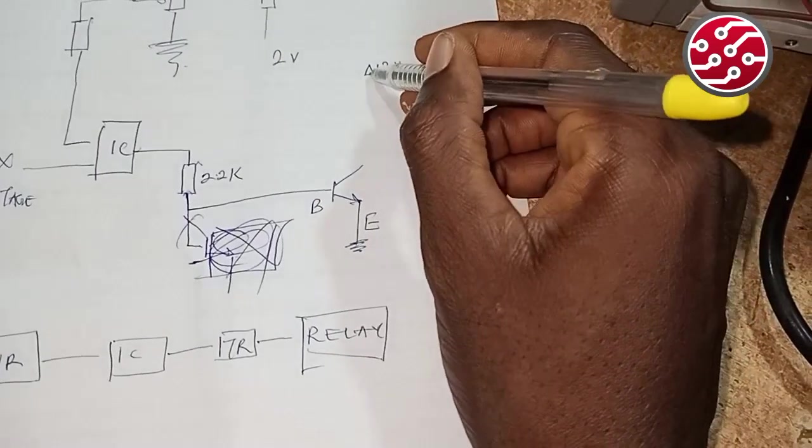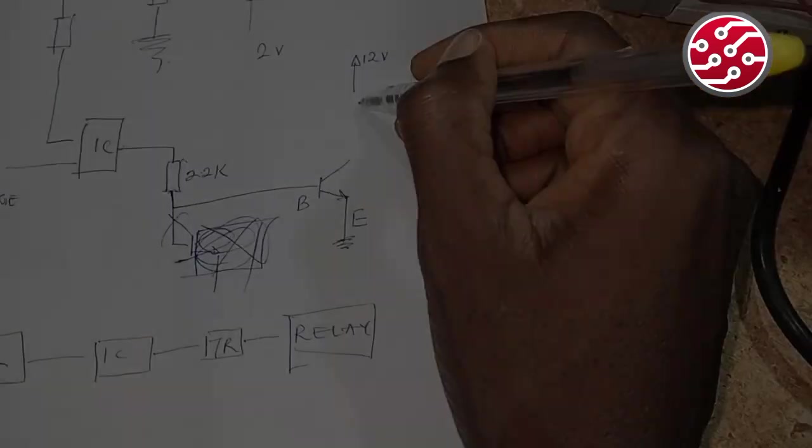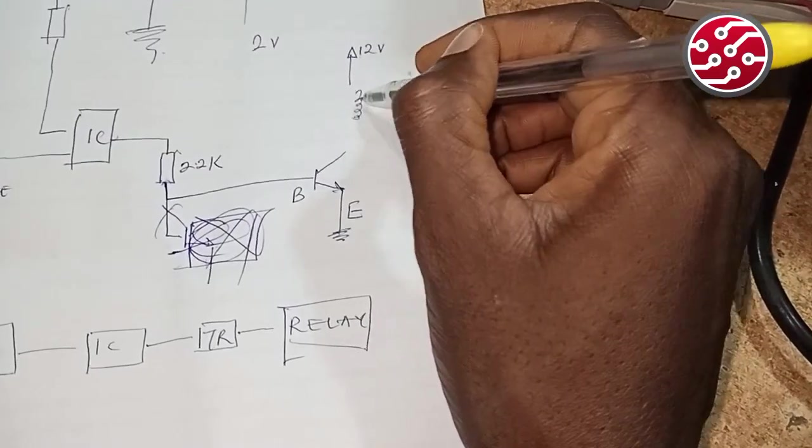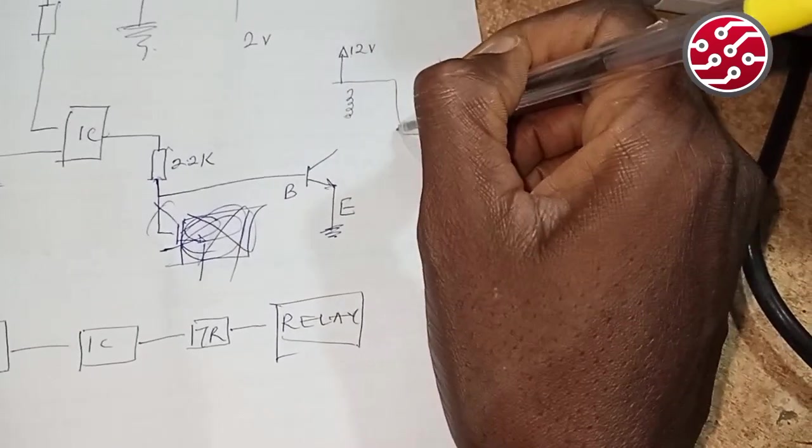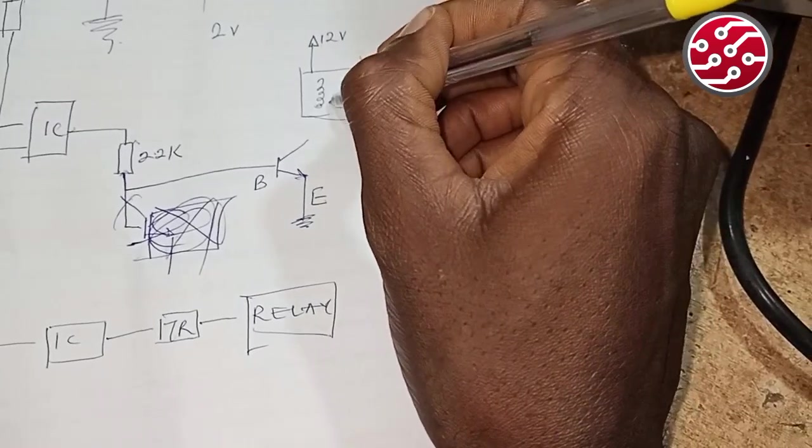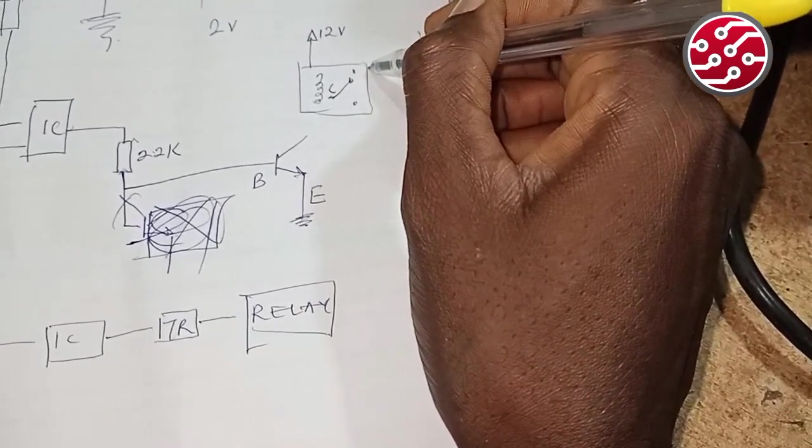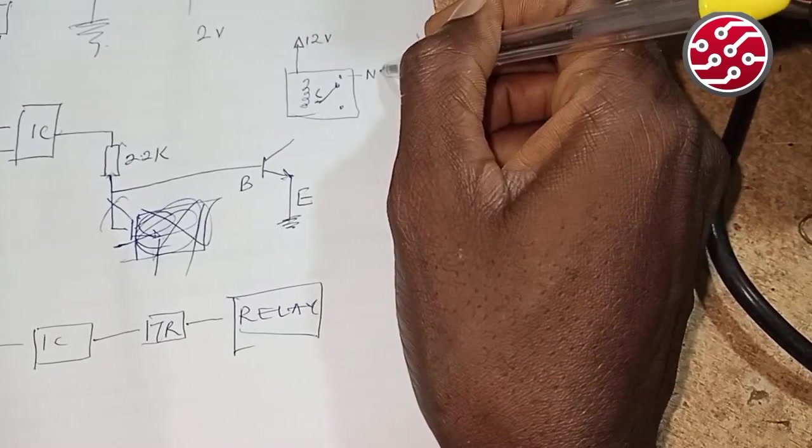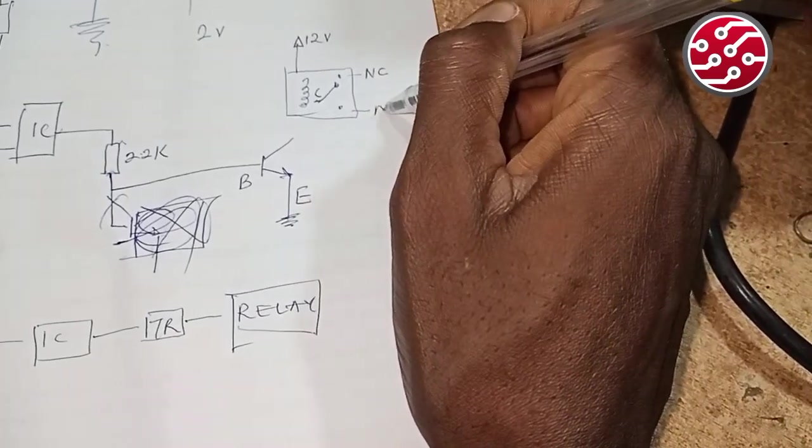Now this is normally your 12 volts. The relay is here. Here is the contact, normally closed. Here is normally open.